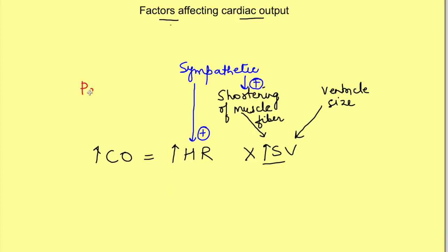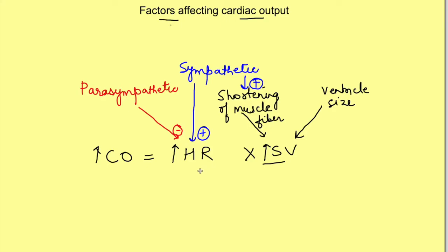On the other hand there is parasympathetic activity. Parasympathetic activity decreases the heart rate but has minimal effect on the stroke volume. We should be very clear that parasympathetic activity basically supplies the SA node and it affects the heart rate and not stroke volume, because there is minimal parasympathetic innervation on the muscle as such.